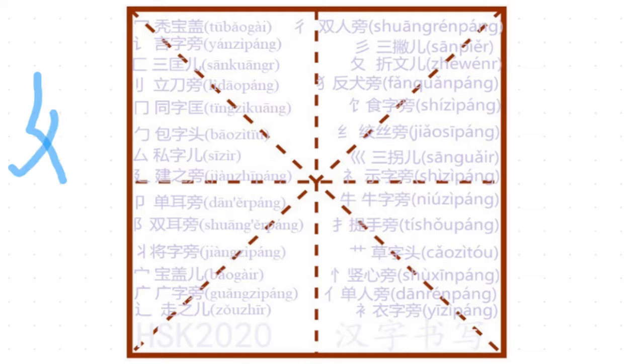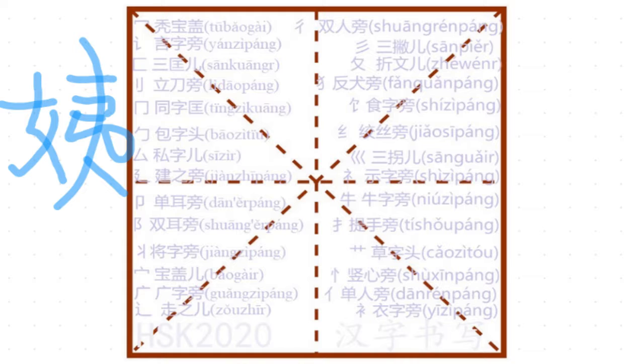漢字書寫 Chinese character handwriting — 儀, 阿姨的儀. 女字旁, 女, then the right side is also called 儀. 儀 meaning aunt — mother's sister. Generally, you can say someone is aunt if someone is similar to mom's age.